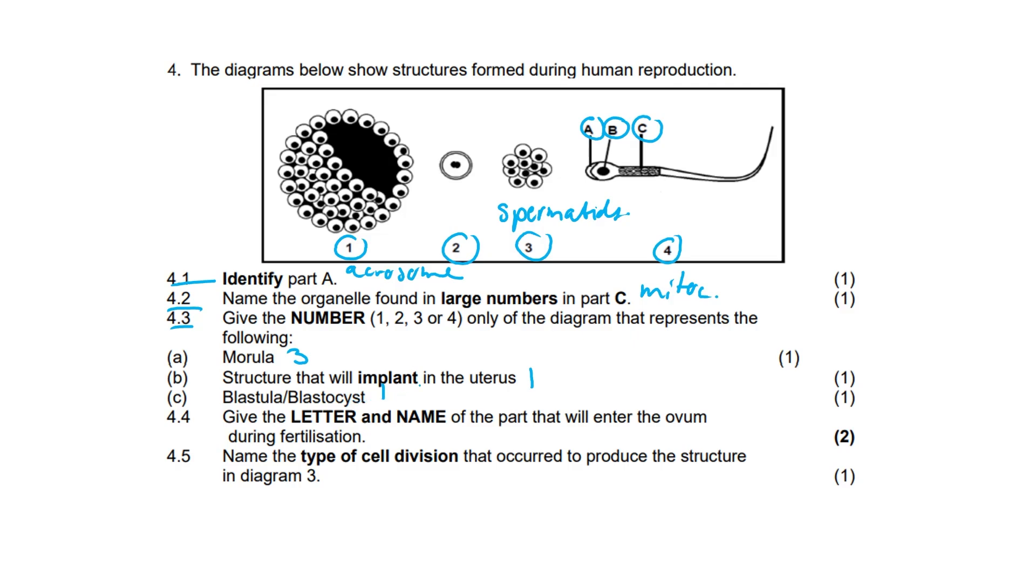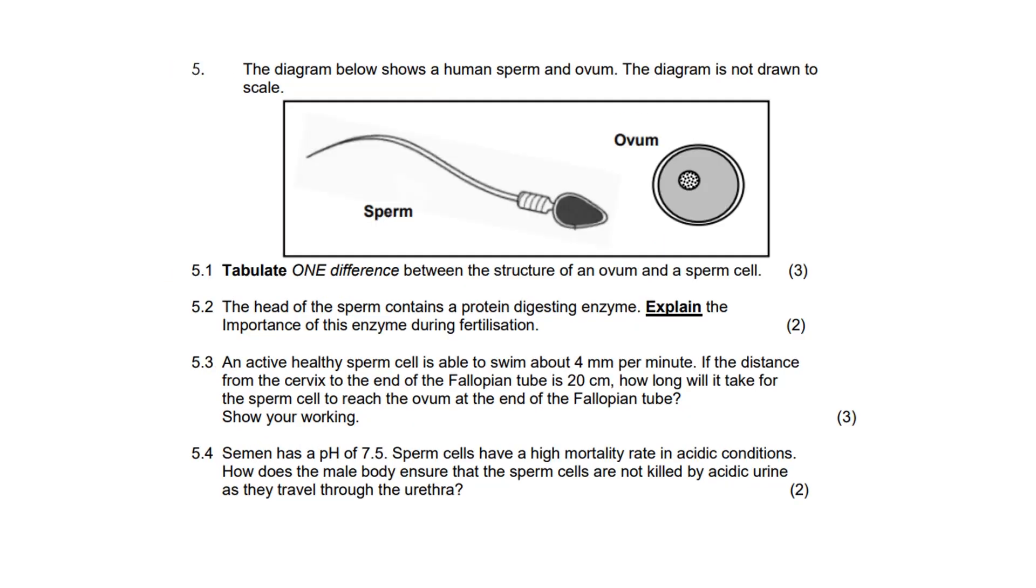4.5: Name the type of cell division that occurred to produce the structure in diagram three. As previously stated, this is going to be mitosis. Question five: The diagram below shows a human sperm and ovum. The diagram is not drawn to scale.